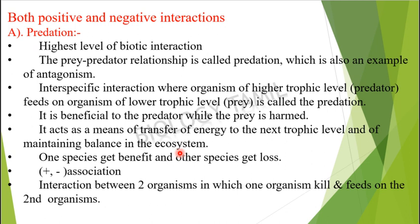Predation helps in maintaining balance in the ecosystem. When a carnivorous animal increases, the prey population is kept in balance. One species gets benefit and the other species gets loss — this is the plus-minus association. Predation is the interaction between two organisms in which one organism kills and feeds on the second organism.